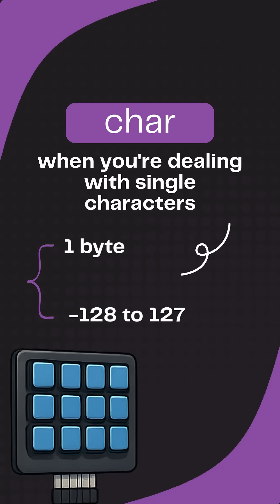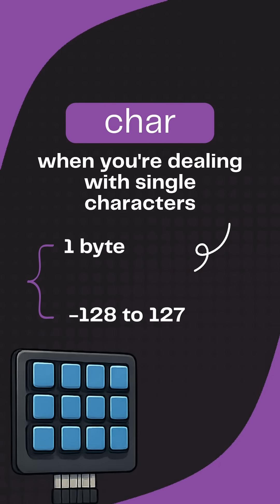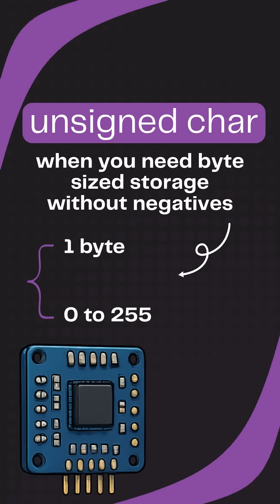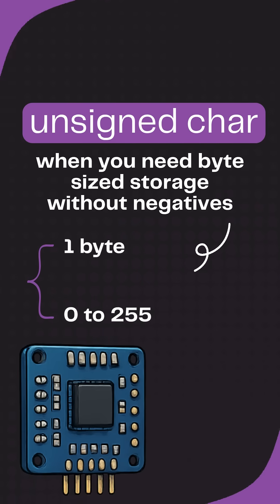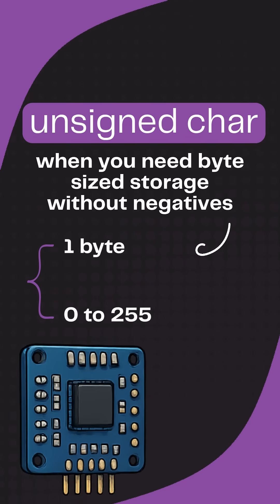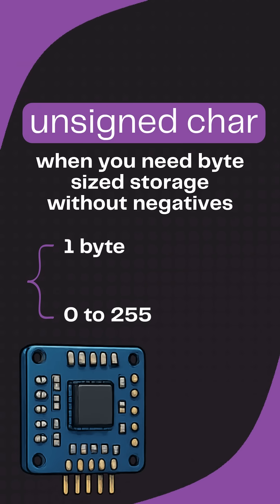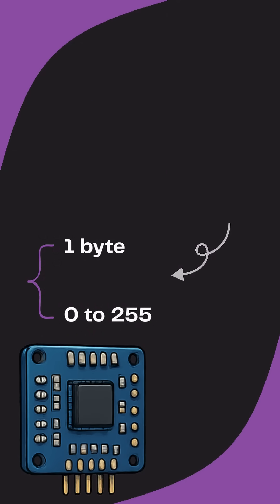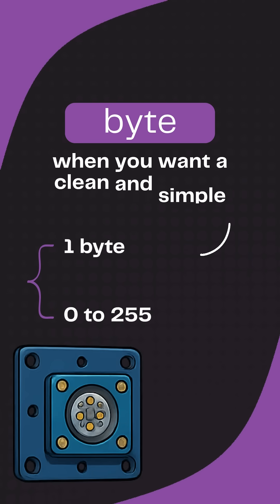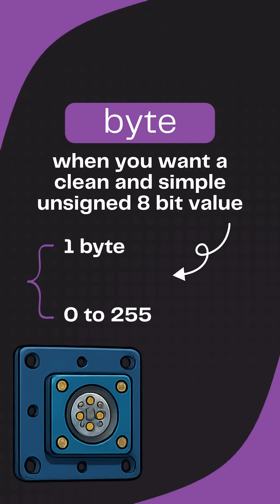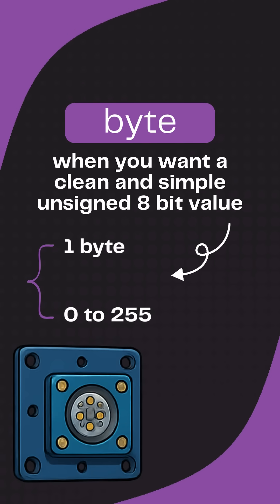Use char to store keyboard inputs — it holds one single character in one byte. Use unsigned char for 8-bit data from I2C sensors — no negatives, compact, fast, and clean. Byte is just like unsigned char but clearer to read — use it for digital sensor state or compact storage.